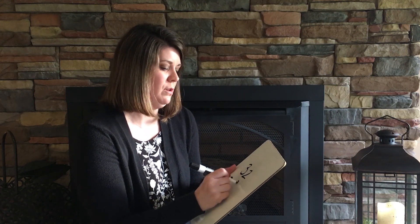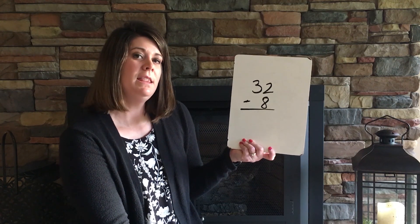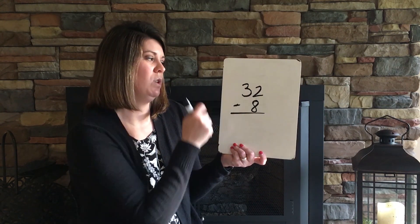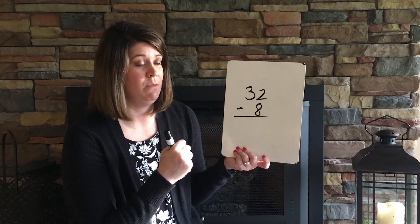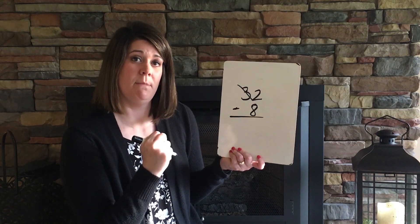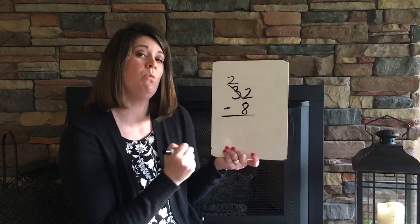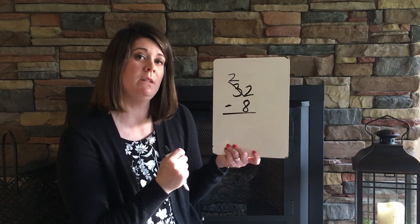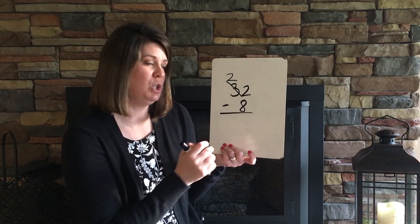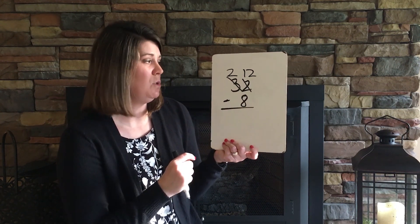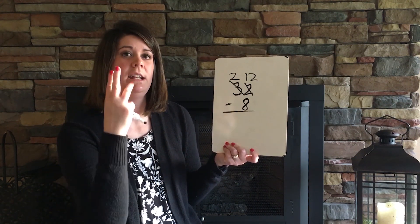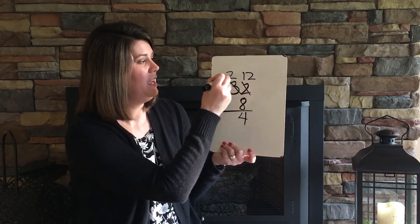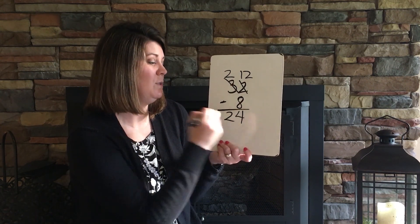Let's do 32 minus 8. Looking at my 1's place: more on the floor, so I go next door and get 10 more. I take 1 from my 10's place — I had 3, now I have 2. Moving that 10 to the 1's place: 10 plus 2 is 12. I put 8 in my head and count up to 12: 8, 9, 10, 11, 12 — that leaves 4. With 2 in the 10's place, the answer is 24.